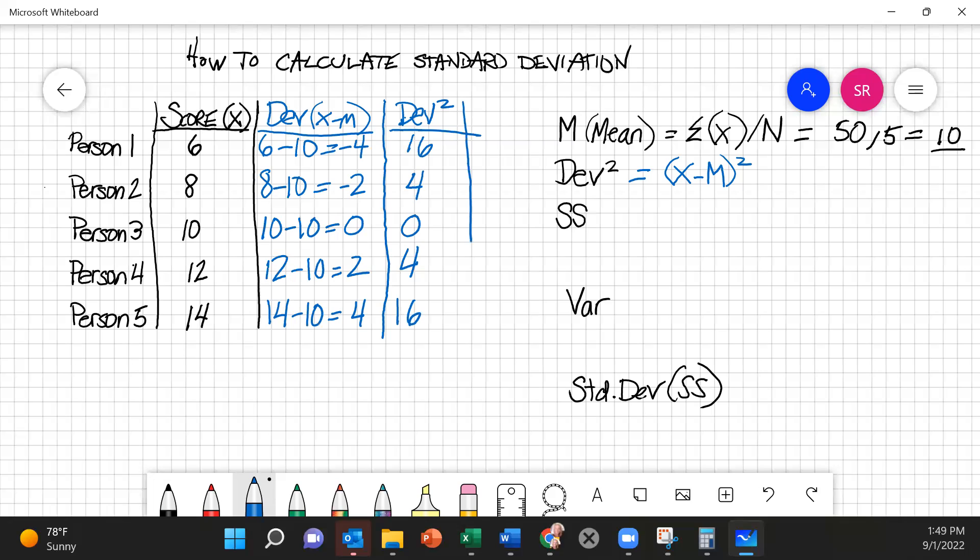These are our squared deviations. Our next step is to figure out our sum of squared deviations. And so this would be read sum of squares. And what it really means is the sum of squared deviations.